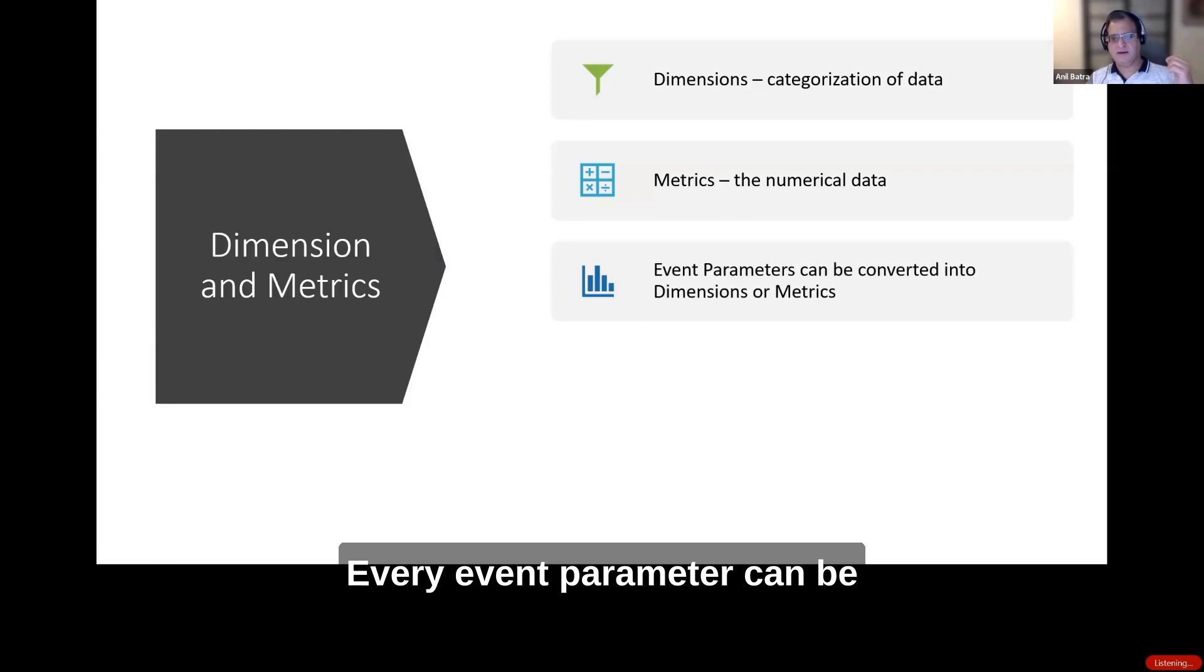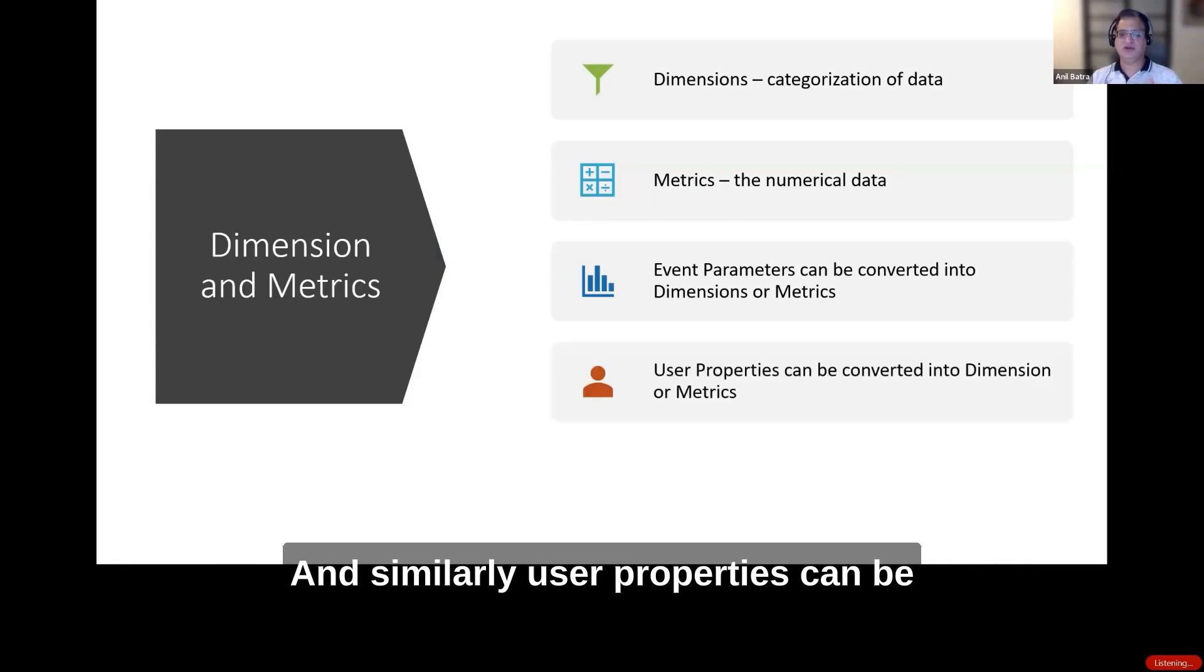Every event parameter can be converted into a dimension or a metric. When you pass this information to GA4, you have to convert them into dimensions or metrics. Similarly, user properties can be converted into dimensions or metrics.